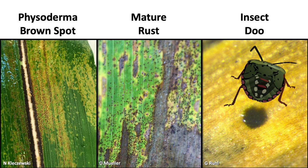A significant issue has been the misidentification of insect frass as tar spot. Insects will use corn, especially earlier in the season, as a place to deposit waste. When frass is deposited, it looks a lot like the stroma that bear the spores. You can pour water on these spots and they'll wash off — you can rub it between your fingers and wash it off. You don't want to be the person who calls in an airplane and costs their producer or client a lot of money to spray a fungicide on a field to control insect frass.